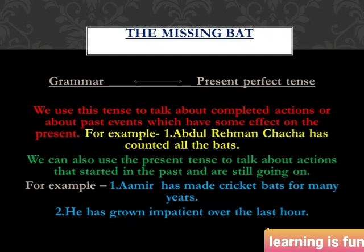The grammar portion discussed in 'The Missing Bat' is about the present perfect tense. Before going to the present perfect tense, we will discuss what tense is. Tense is a concept in English used to refer to time — past, present, or future. The present perfect is a grammatical combination of the present tense and perfect aspect, used to express a past event that has present consequences. We use this tense to talk about completed actions or past events which have some effect on the present.